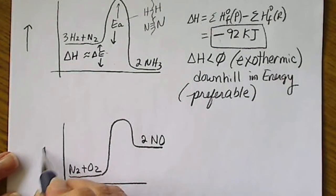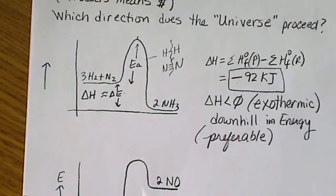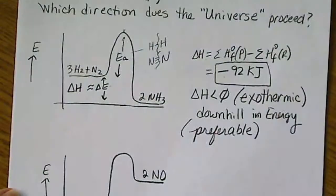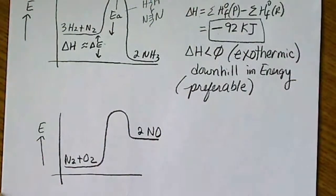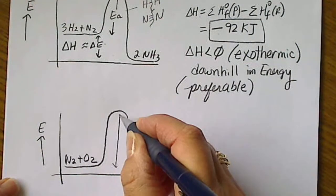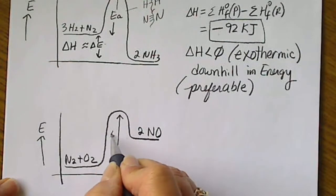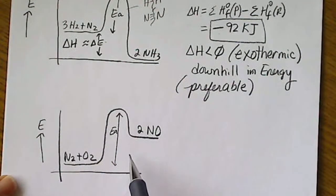Again, energy is increasing as we go up the diagram in both cases. Because we still have an activation energy here. So that's our E sub A, the activation energy.